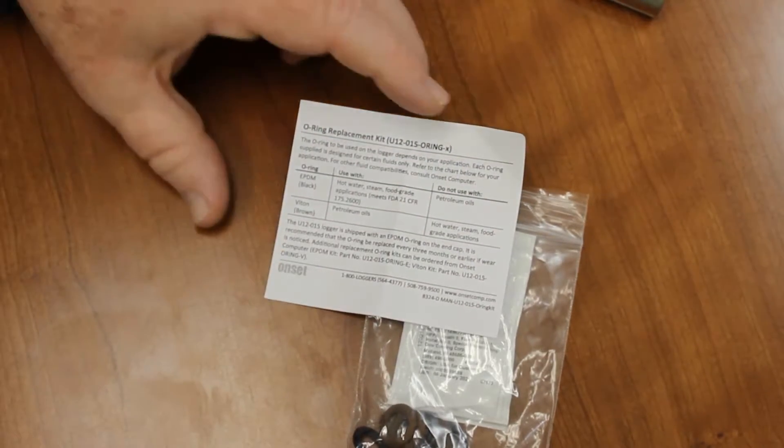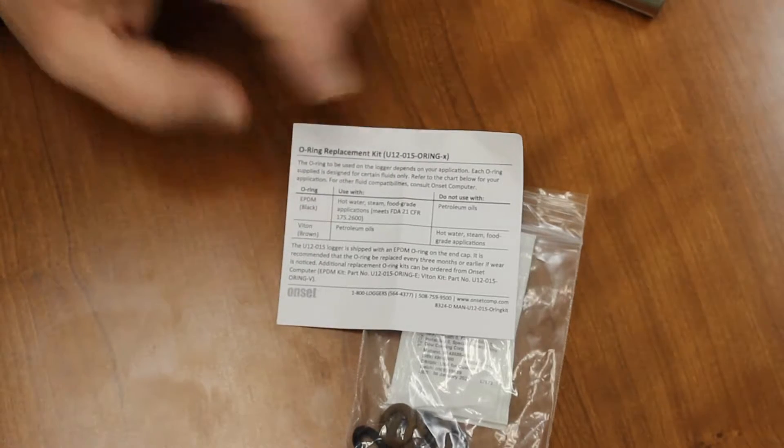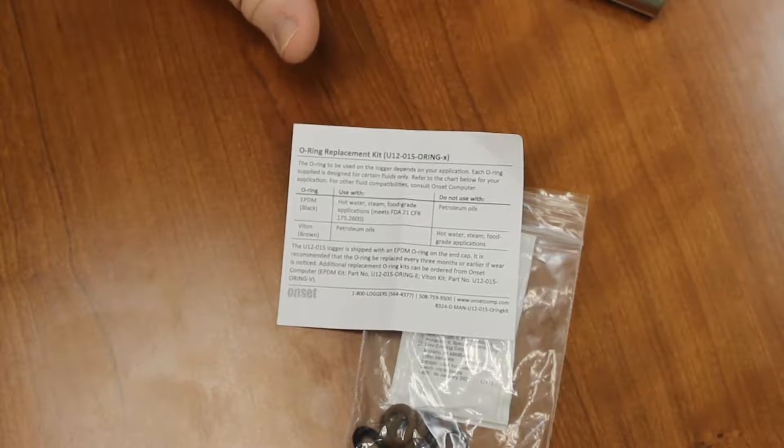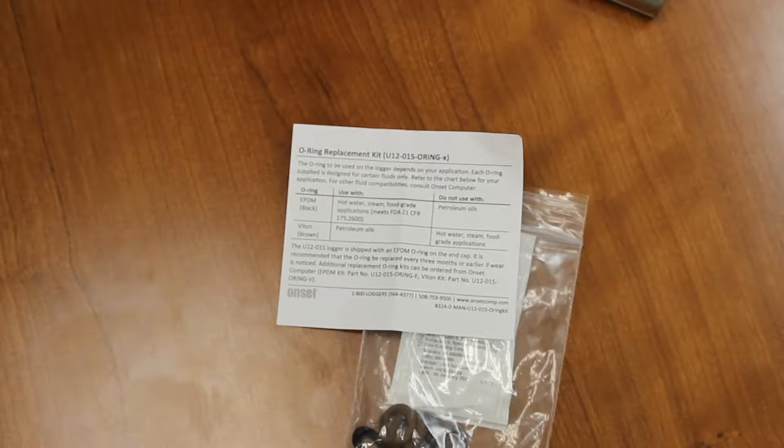Basically, the black O-rings are made out of a compound called EPDM. And that's what comes installed on the logger. That type of material is designed for use with hot water, with steam, or for food-grade type applications.